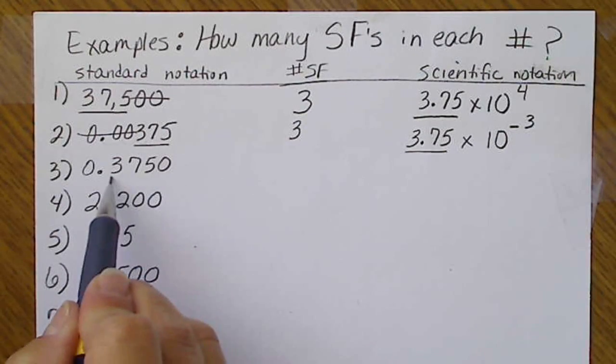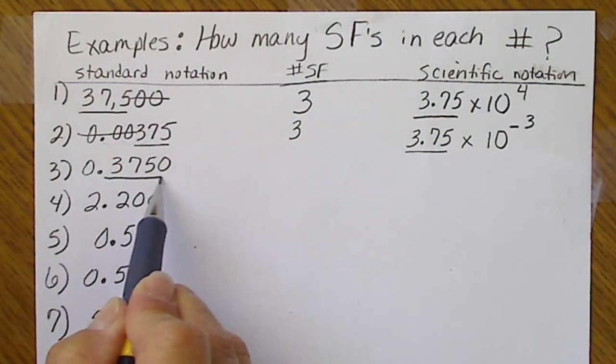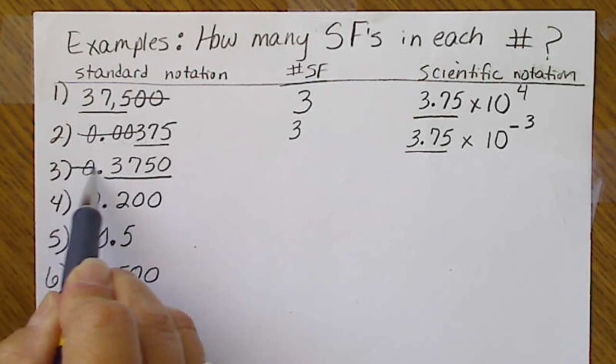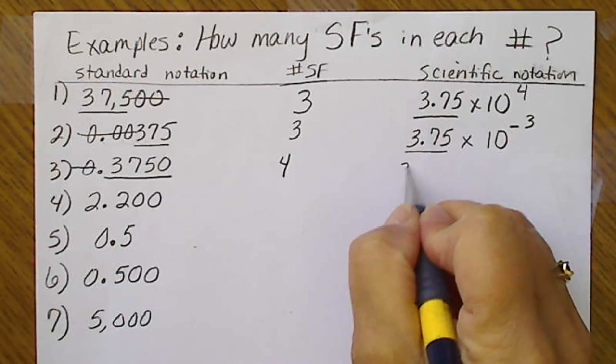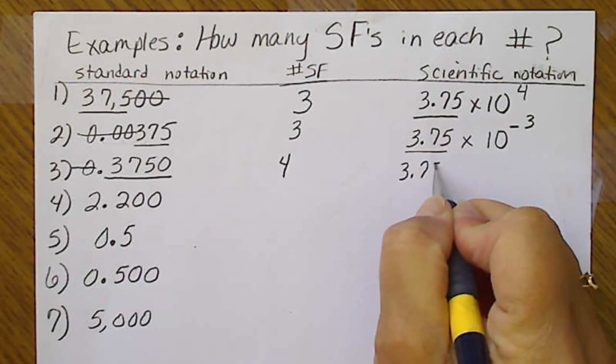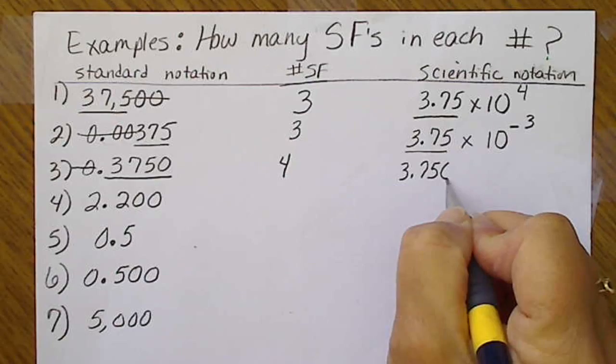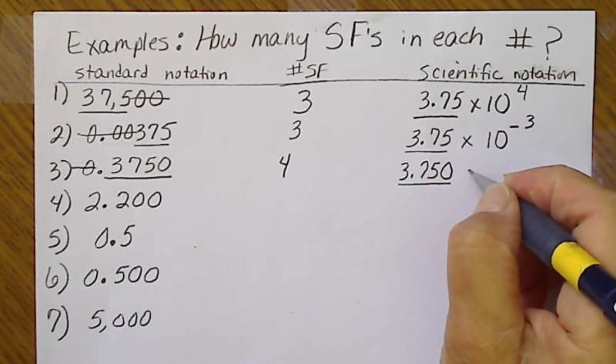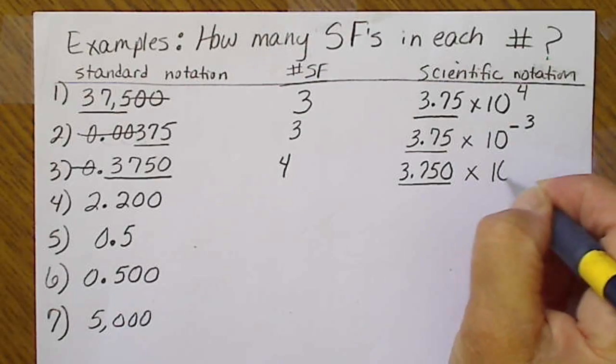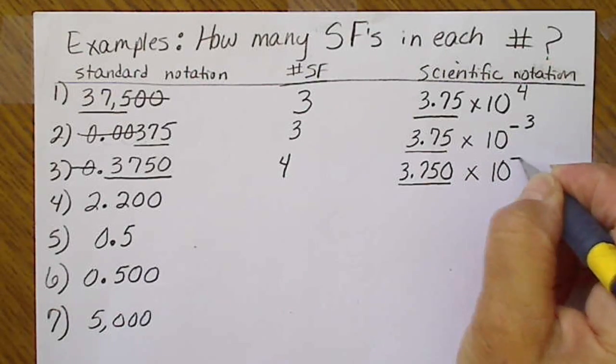This number has four significant figures. We are always going to cross out all the zeros at the beginning, meaning everything else remains significant. So that's got four significant figures. And in scientific notation, we would be incorrect unless we remembered to put that zero as part of that value. This is going to be 10 to the negative 1.